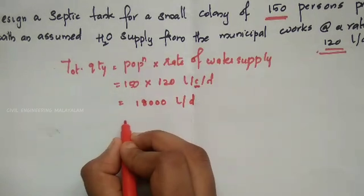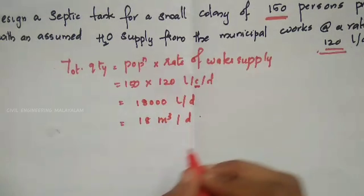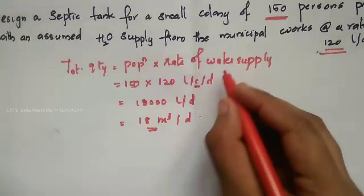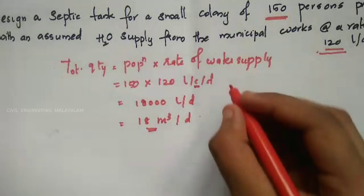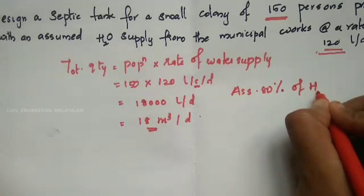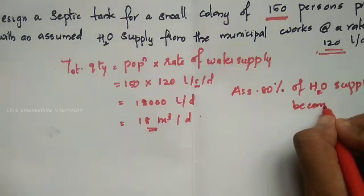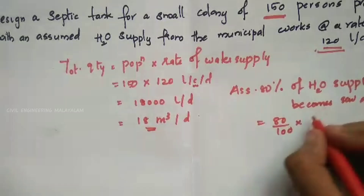Next, we determine the quantity of sewage. We assume that 80% of the water supply becomes sewage. So 80% of 18,000 litres equals 14.4 m³ per day.